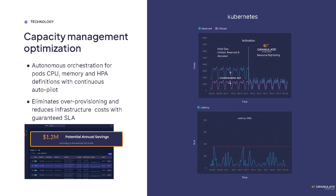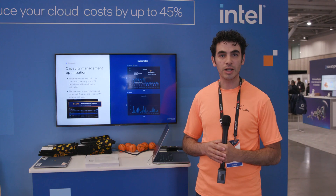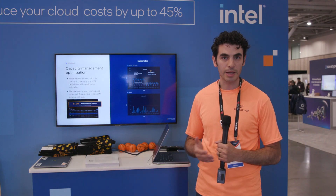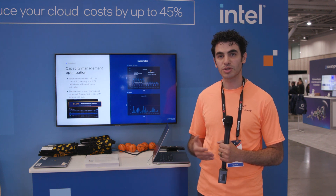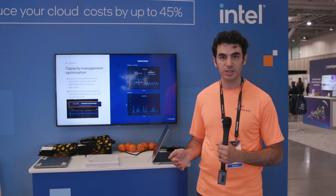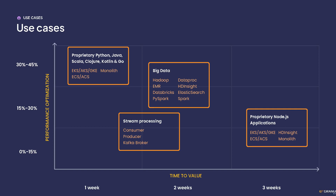In addition to the application layer optimizations, we also provide a capacity management solution that will help in Kubernetes-based environments, including Red Hat OpenShift, where we can intelligently set CPU requests on a per-deployment basis. This helps reduce the over-provisioning gap, which further reduces costs. So we are now able to reduce costs both at the application layer as well as the orchestration layer.